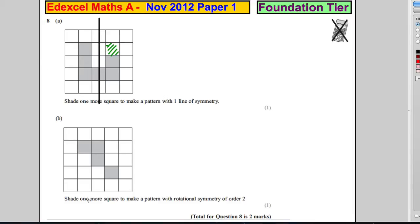Now, shade one more square to make the pattern have rotational symmetry of order two. Remember what that means. That means if we twist the shape around, it will fit inside itself once and then once when it returns to itself.